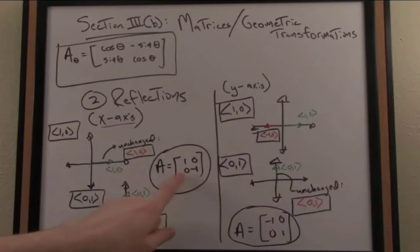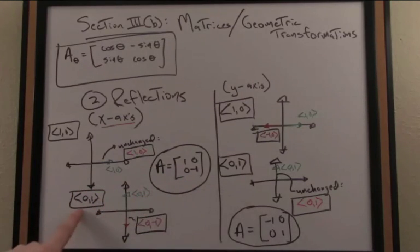I have the image here written as a column vector of the vector 1, 0, and the image written again as a column vector of the vector 0, 1. Similarly for the y-axis it's kind of the same story.